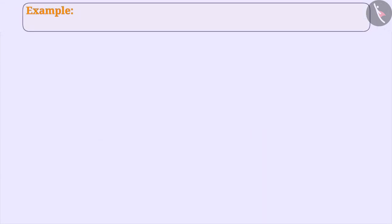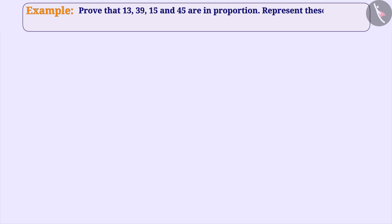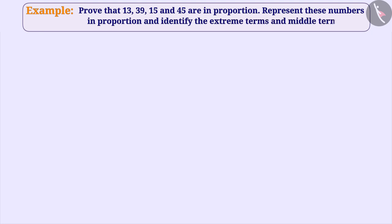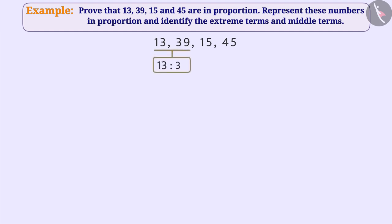Next example: Prove that 13, 39, 15 and 45 are in proportion. Represent these numbers in proportion and identify the extreme terms and middle terms. 13, 39, 15 and 45 will be in proportion only when the ratio of the first two terms, that is 13 is to 39, is equal to the ratio of the last two terms, that is 15 is to 45.